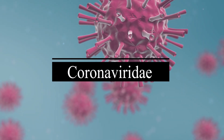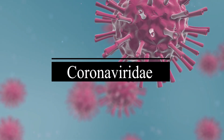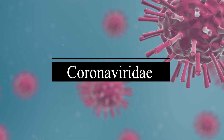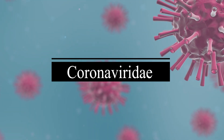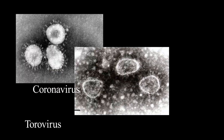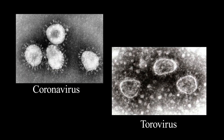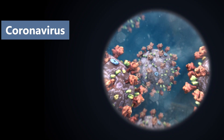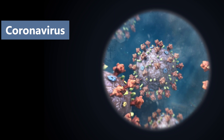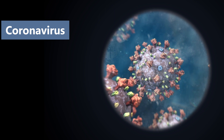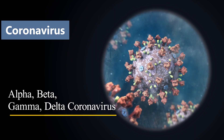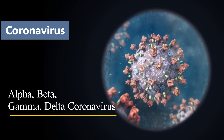Coronaviridae is a family of enveloped RNA viruses that cause diseases in human beings and other animals. It includes two genera: coronavirus and torovirus. Coronaviruses are more important as they cause a variety of diseases. They have been divided into four genera: alpha, beta, gamma, and delta coronavirus.